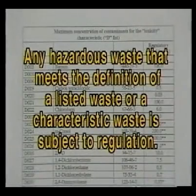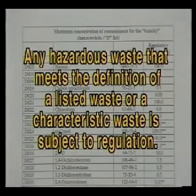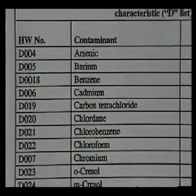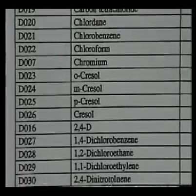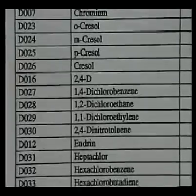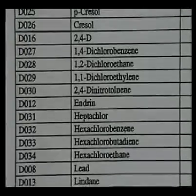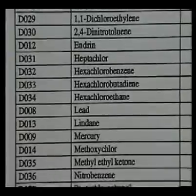Under RCRA's existing regulations, any hazardous waste generated that meets the definition of a listed waste or a characteristic waste is subject to regulation. Characteristic wastes are residuals with chemical characteristics that meet specific numerical parameters that make them hazardous; these are enumerated on the D list. Listed wastes mean residuals only need to meet the listed description of the definition to be hazardous — this description does not rely on the presence and concentration of specific chemicals. While other waste codes such as K001 do apply to wood treatment facilities, our focus here is only on the new codes.